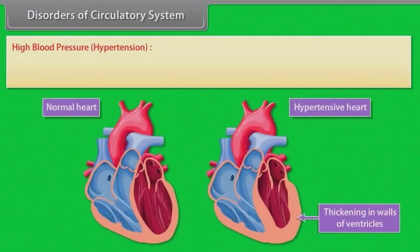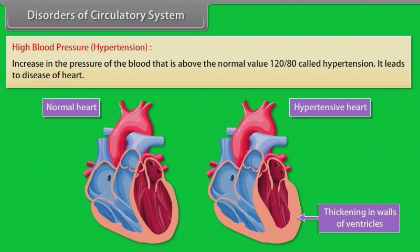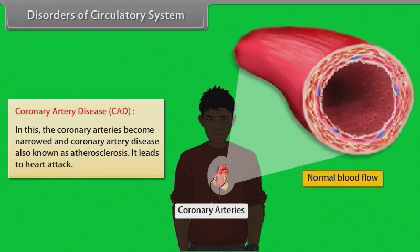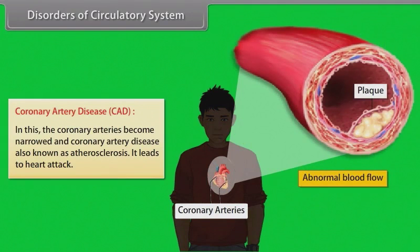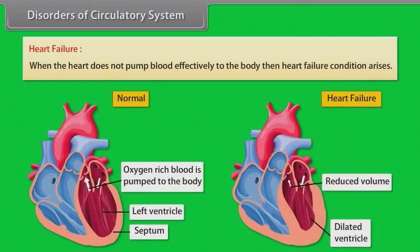Disorders of the circulatory system include: hypertension, where blood pressure is above the normal value of 120/80, which leads to heart disease; coronary artery disease (CAD), also known as atherosclerosis, where coronary arteries become narrowed and can lead to heart attack; angina, which results in chest pain when not enough oxygen is available to the heart; and heart failure, when the heart does not pump blood effectively to the body.